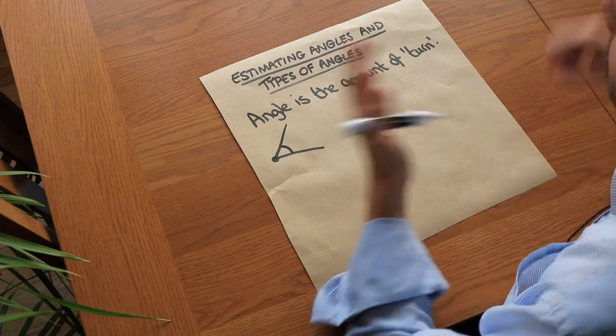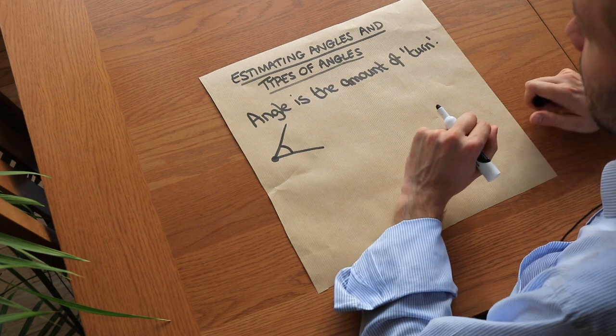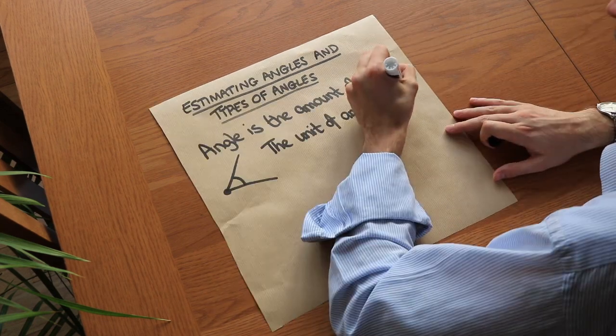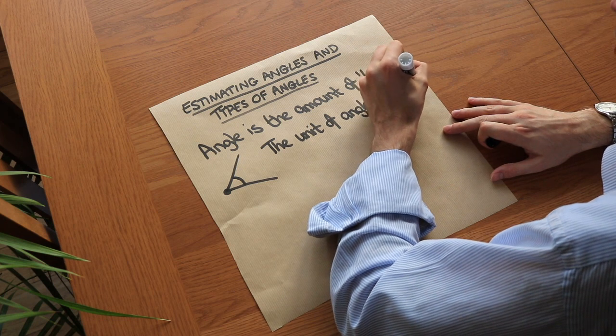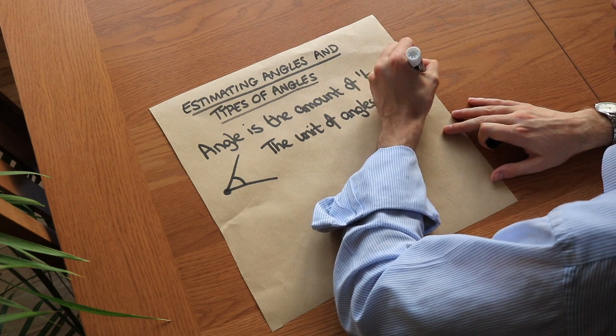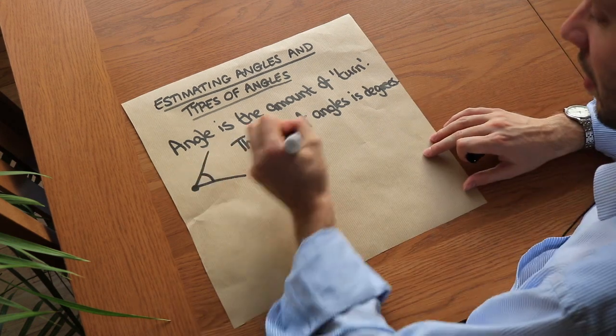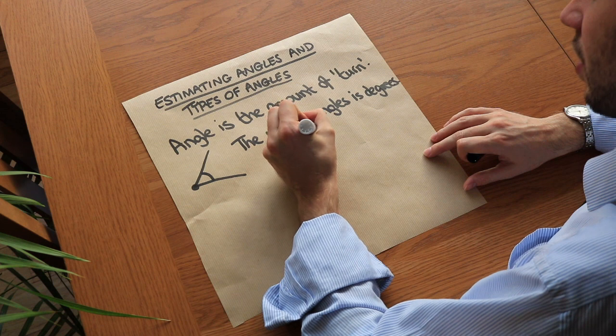We need some kind of unit for an angle, just like we have units for length like centimeters or kilometers. We have something called degrees. Degrees isn't the only unit for angles, but it's the only one you'll see unless you do A-level. We write it like this, so this angle, for example, might be 60 degrees.